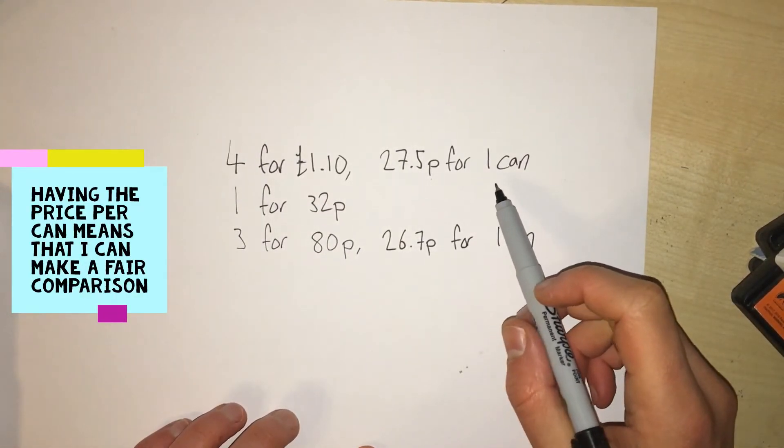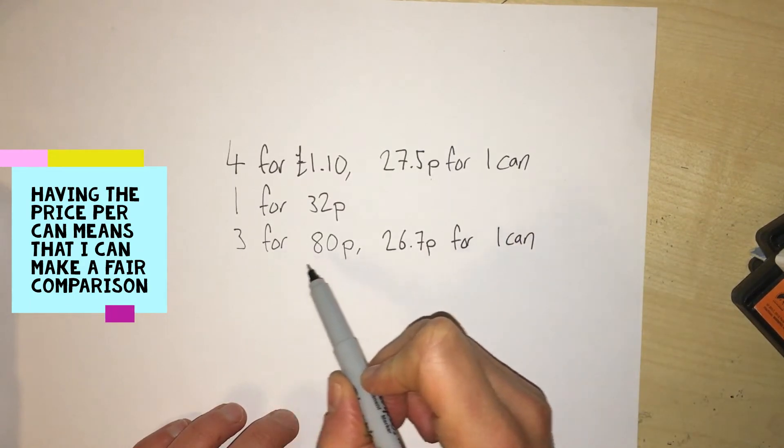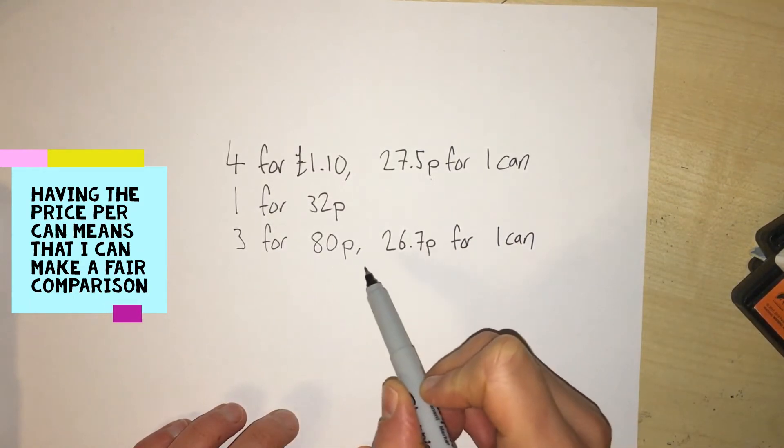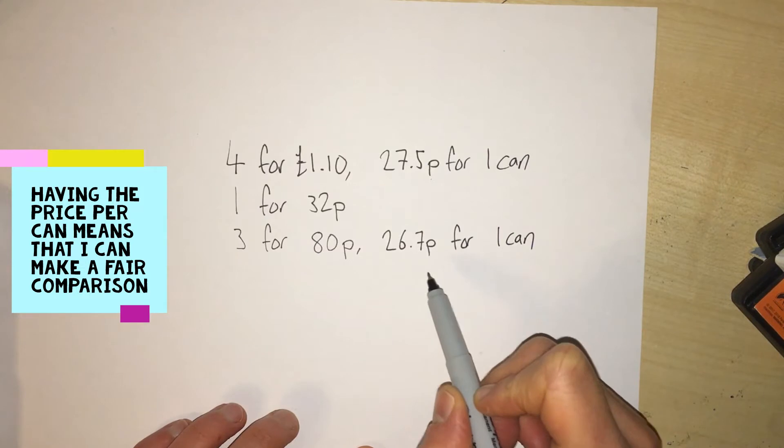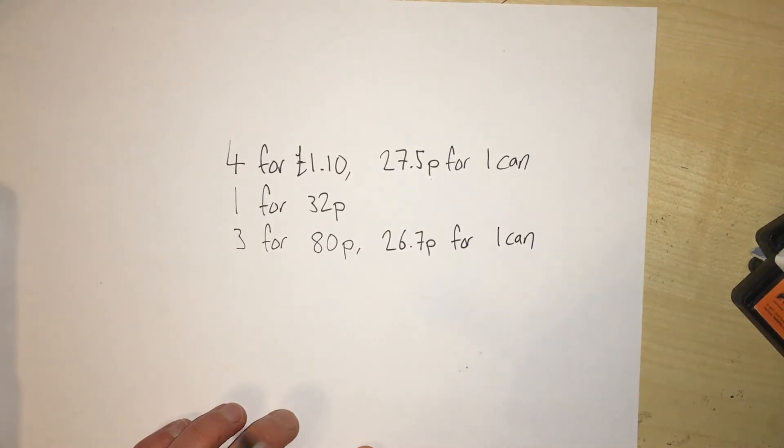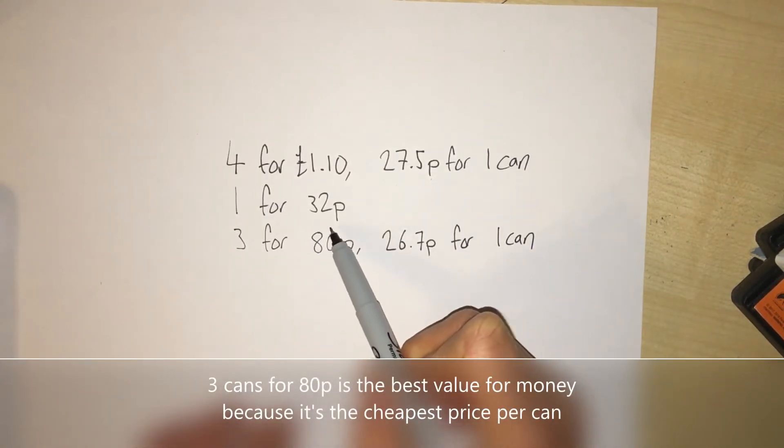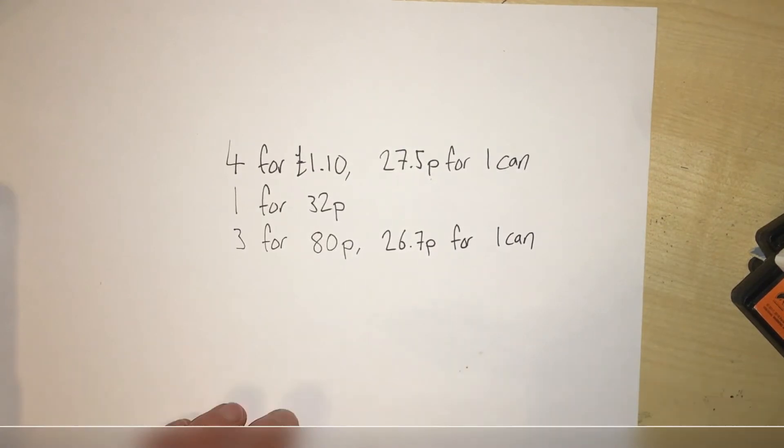I can see that I should have bought three for 80p because that's only 26.7 pence for one can compared to 32p or 27.5 pence. However, I needed four cans, so actually maybe it wasn't such a bad deal after all. Let's express the same problem but in a different way, just like an exam question.